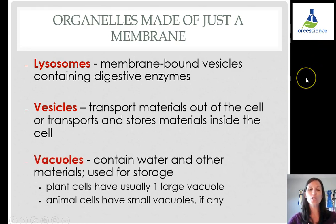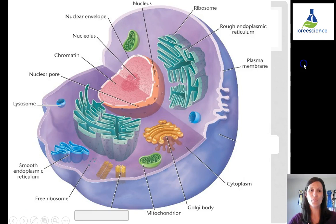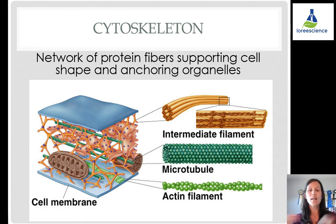Vacuoles are storage containers. In plants, they usually have one very large vacuole. Animal cells, if they have vacuoles, have very small ones — fat cells would have more vacuoles because they store materials. Lastly in the animal cell is the centriole, which is part of the cytoskeleton — a network of supporting materials that helps move and anchor organelles and transport things inside the cell.